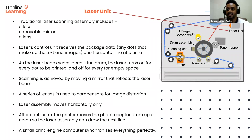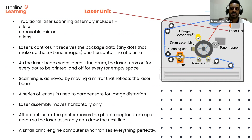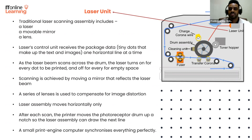The laser assembly then moves horizontally only. After each line of scan, the printer moves the photoreceptor drum — or the drum unit — up a notch so the laser assembly can scan the next line. A small print engine computer synchronizes all of this perfectly, even at high speeds.